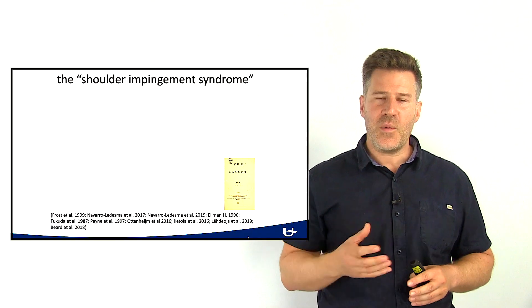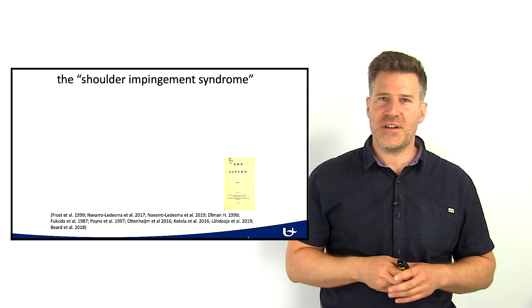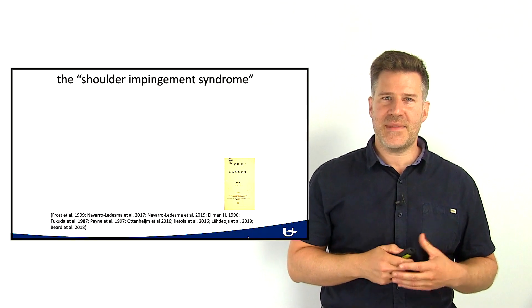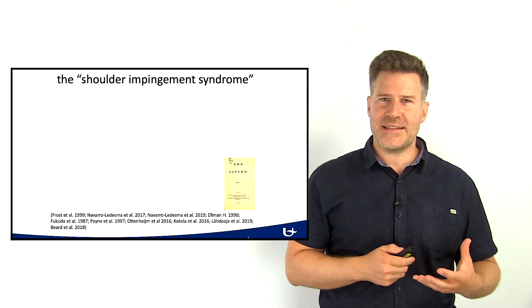For instance, the Hawkins-Kennedy test, the Jobe test, the Neer sign — all are designed to provoke the subacromial space, but none of them succeed at that. Are we maybe searching for a mechanism that does not exist?